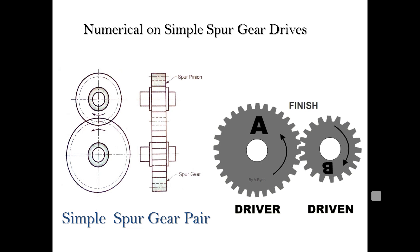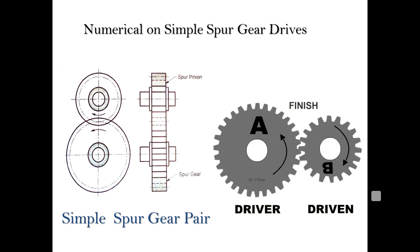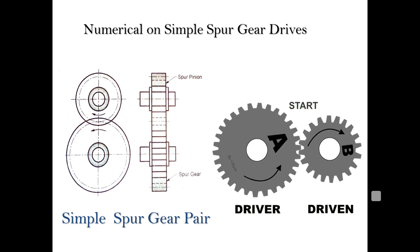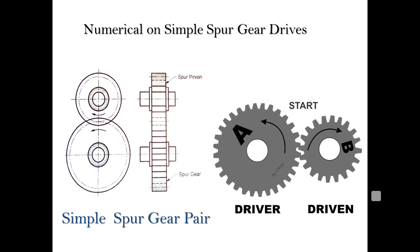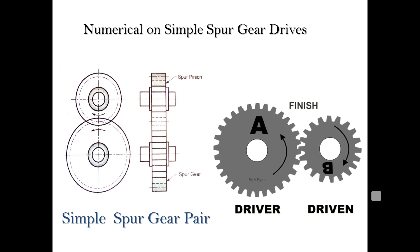In this lecture we are going to discuss numericals on simple spur gear drives, which are very important for online MCQs, two-mark questions, and final exams. Spur gears are gears whose teeth are manufactured along the axis of the shaft, giving parallel straight teeth. Spur gears are the noisiest gears because of their sudden line contact between teeth.